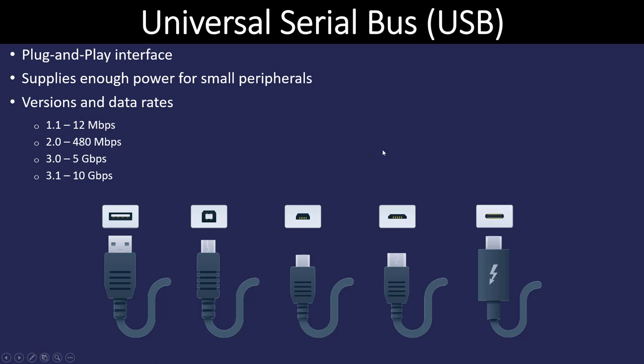USB has been modified over the years. The original specification, 1.1, was relatively slow at 12 megabytes. Then we had USB 2.0 at a much faster 480 megabytes. USB 3.0 brought us 5 gigabytes per second, and USB 3.1 doubled that to 10 gigabytes. Each USB specification also has a power rating that has changed over time — practically important to know, even if it's not on the IT fundamentals exam.